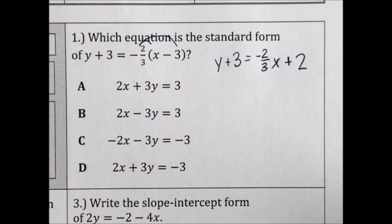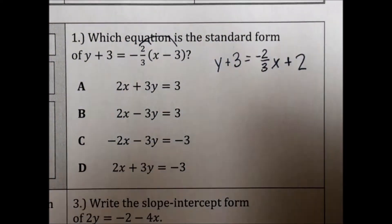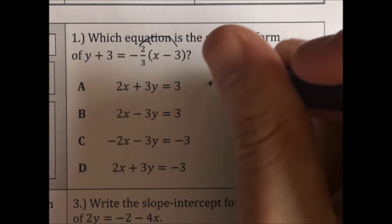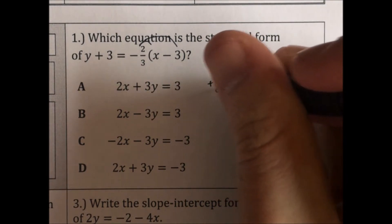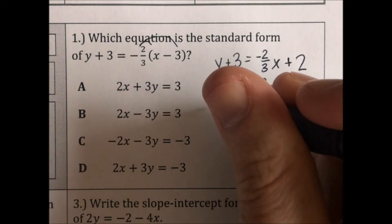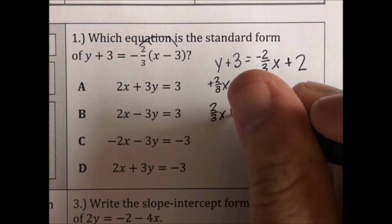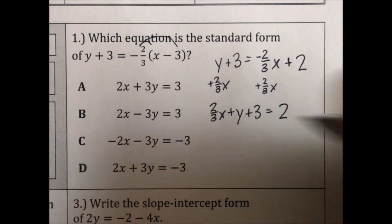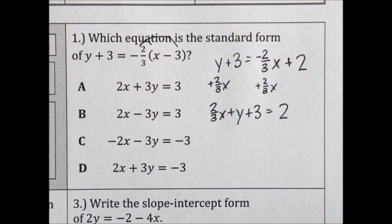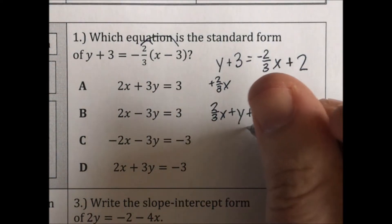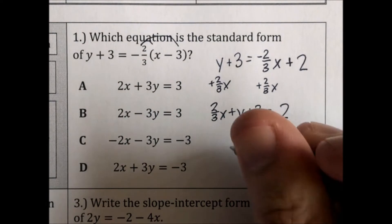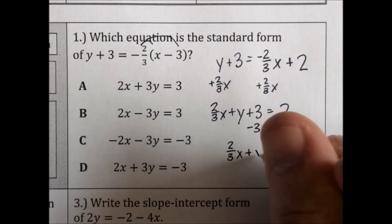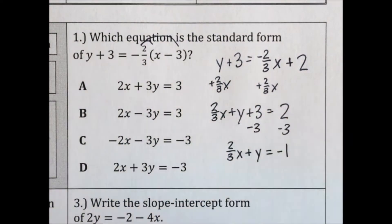Now we need to get the x and y on the same side, so I'm going to do plus two-thirds x to both sides. And I'm going to get two-thirds x plus y plus 3 equals 2. Now we need to get the 3 over there, so we're going to do minus 3 to both sides. And we get two-thirds x plus y equals negative one.